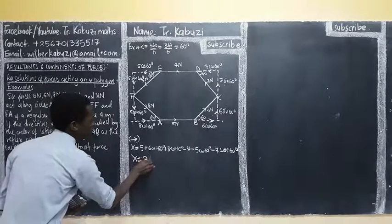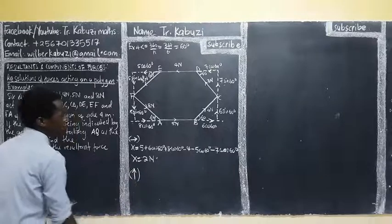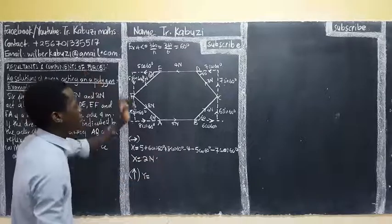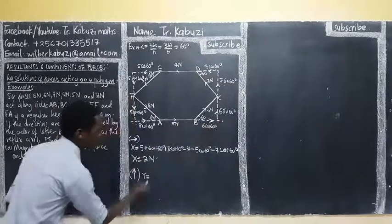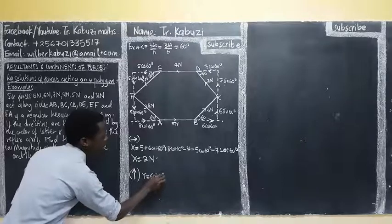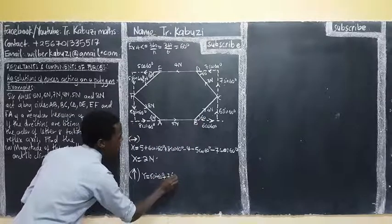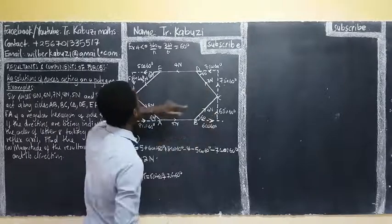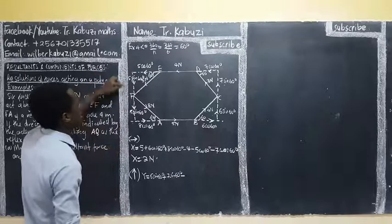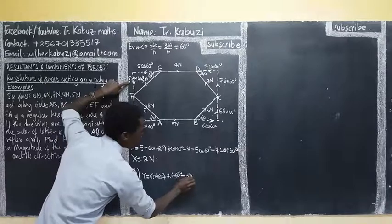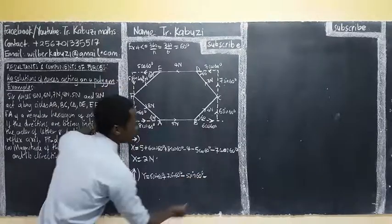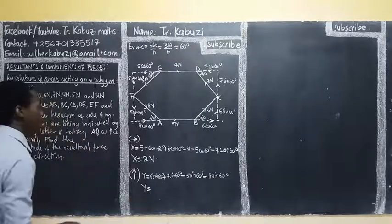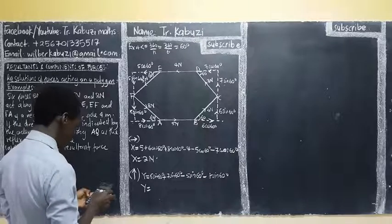Then let me resolve vertically. My Y vertical components. Those are the ones which are going vertical. We start with those going upward: we have 6 sin 60 degrees, then plus 7 sin 60 degrees. Is there anyone going in that direction? No. We have only those two. Then these ones are opposing - they are opposing, so for them we subtract. So this will be minus 5 sin 60 degrees, then minus 8 sin 60 degrees.